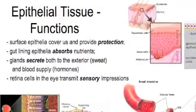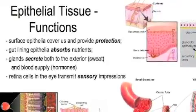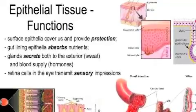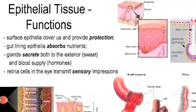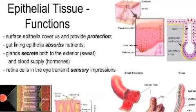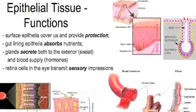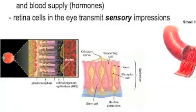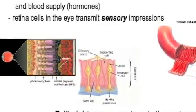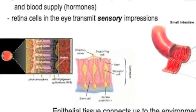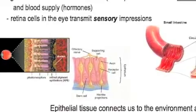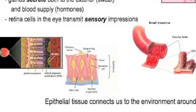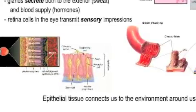Let's dive deeper and discuss epithelial tissue. It has multiple functions. Surface epithelia covers us and provides protection. Gut lining epithelia absorbs nutrients. Glands secrete both to the exterior, like sweat, and into the blood supply — hormones such as insulin do that. Retinal cells in the eye transmit sensory impressions; they make electricity out of pictures, which get sent to the brain so we can see. Olfactory cells in the nose do the same for smelling. Epithelial tissue connects us to the environment around us.